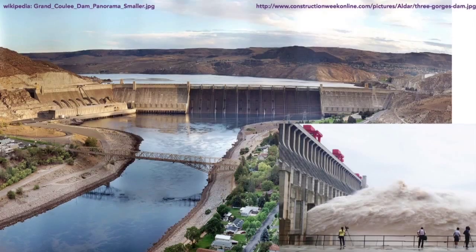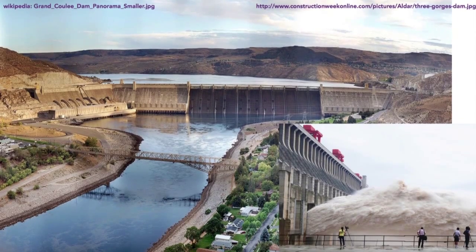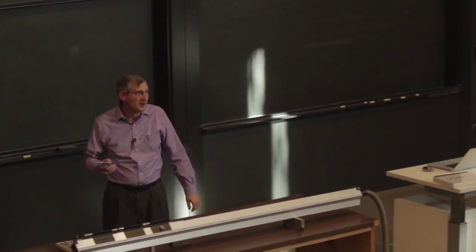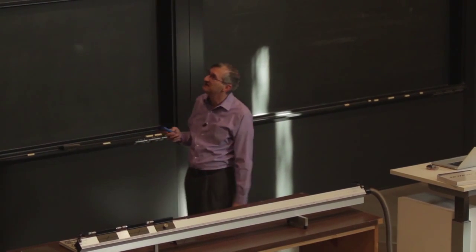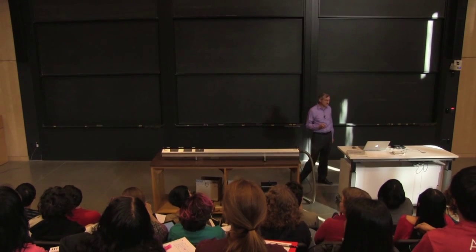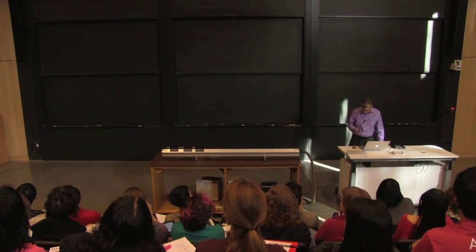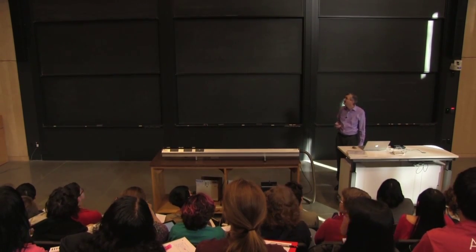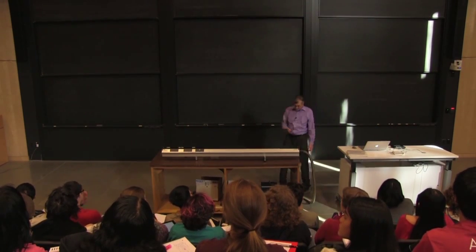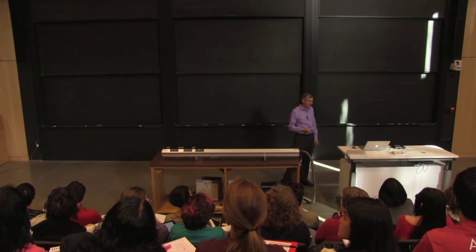This is the Grand Coulee Dam up in Washington. Anybody been there? Is it as impressive as it looks? Nah, she says nah. So the Grand Coulee Dam generates a whole bunch of hydroelectric power. That's one way to get renewable energy and to build that might require a little bit of an understanding of the laws of mechanics.